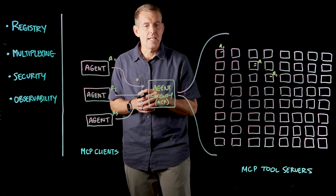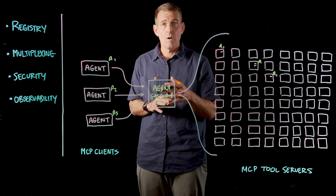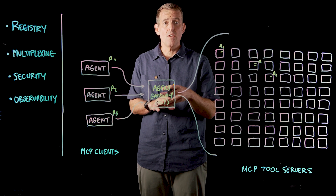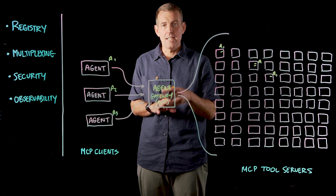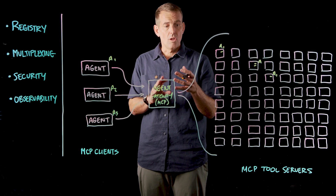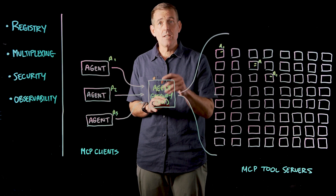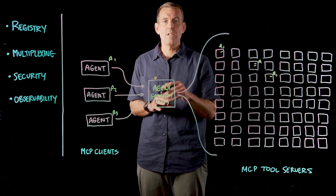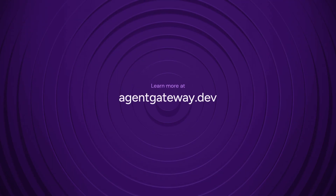One thing I want to highlight is that MCP as a protocol is a stateful protocol, very heavy in terms of body processing — very unlike traditional L7 protocols. That alone challenges existing network infrastructure: load balancers, API gateways, proxies. That's exactly why with Agent Gateway, we implemented a new AI-native data plane from the ground up, designed around these AI and agentic protocols. Check out the Agent Gateway site at agentgateway.dev.